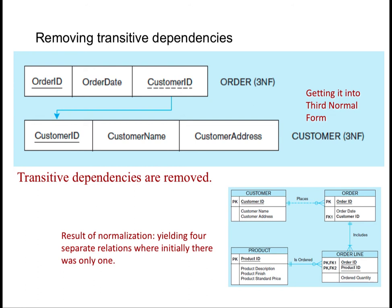Note that if we had started with a thorough ER model, we would not have ended up with one big table containing multiple themes. The original table basically had three separate entities — customer, product, and order — all wrapped into a single relation, hiding the many-to-many relationship between orders and products. This example illustrates the danger of going straight to the logical database design without first performing the conceptual model analysis. But this sort of thing happens often, so we do this normalization.